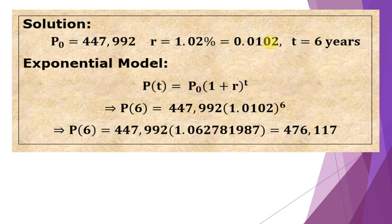So T = 6 years. Why 6 years? Because we have 2021 minus 2015, so that is T = 6 years. Our exponential model is P(t) = P₀(1 + r)ᵗ. In this case, since T is 6, we have P(6) = 447,992(1.0102)⁶.